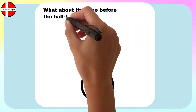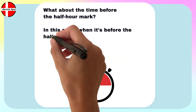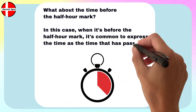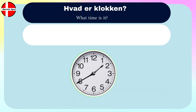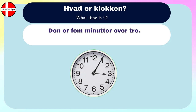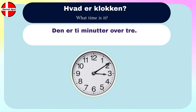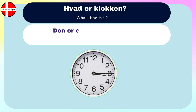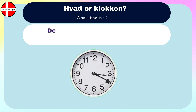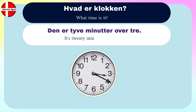What about the time before the half hour mark? In this case, when it's before the half hour mark, it's common to express the time as the time that has passed since the previous hour. This is easy — check the following examples. Hvad er klokken? — What time is it? Den er fem minutter over tre. It's five minutes past three. Den er ti minutter over tre. It's ten minutes past three. Den er femten minutter over tre — den er et kvarter over tre. It's a quarter past three. It's 20 minutes past three.